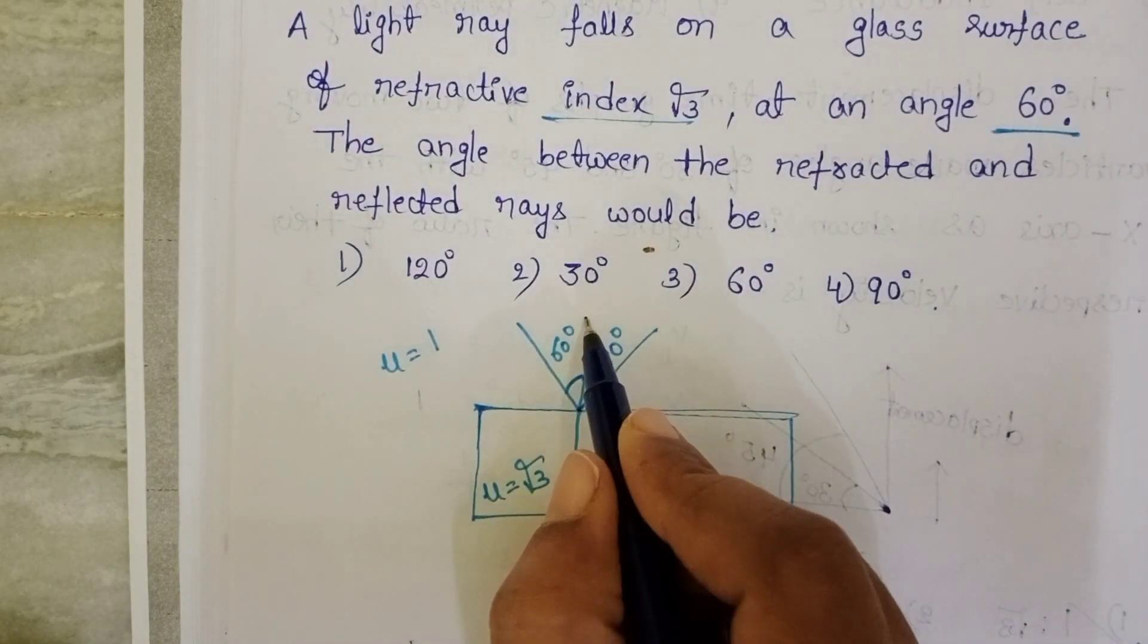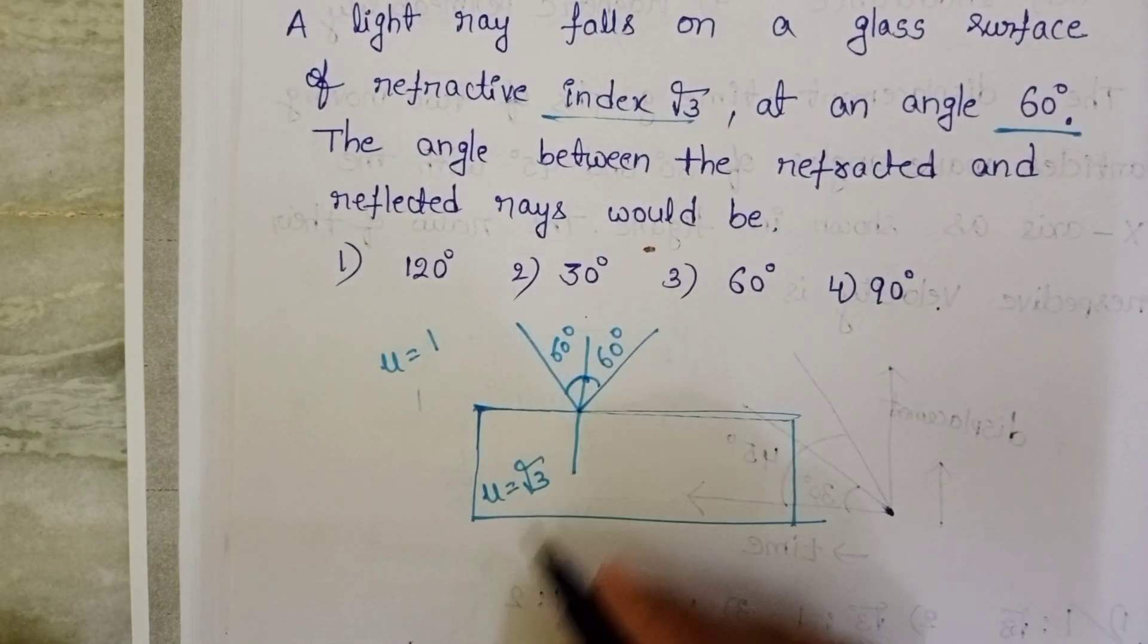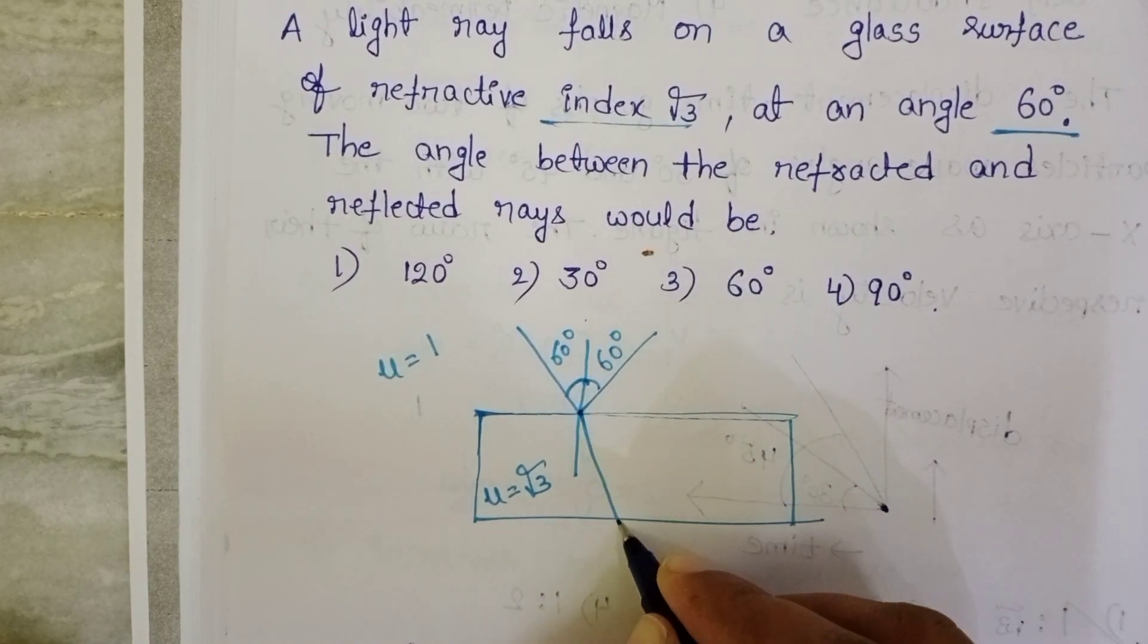Light ray passes from rarer medium to denser medium, velocity decreases and this light ray bends towards the normal.